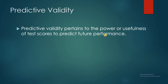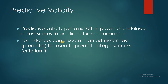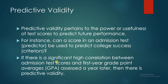Predictive validity, by definition, pertains to the power or usefulness of test scores to predict future performance. It can predict your future performance using a measuring tool or a test. For instance, can a score in an admission test — the predictor — be used to predict college success? College success is the criterion. The answer is yes, if there is a significant high correlation between admission test scores and first year GPA assessed a year later. So there is a time interval. If that condition of significant high correlation is met, then there is a predictive validity of our predictor.